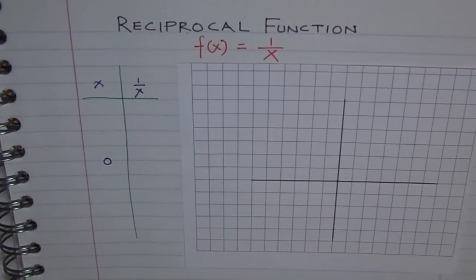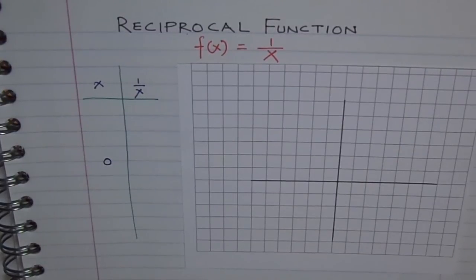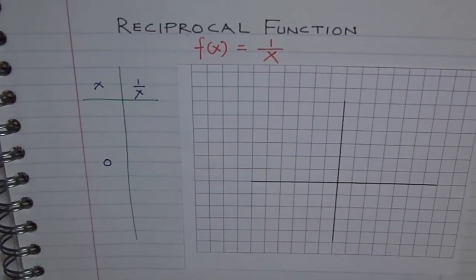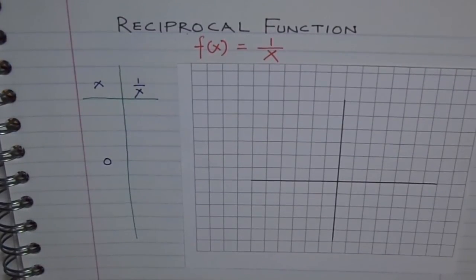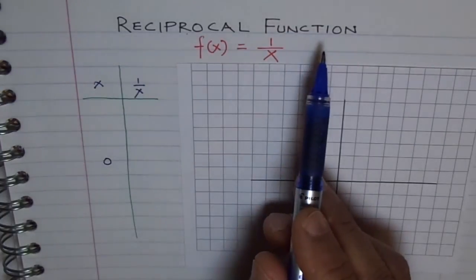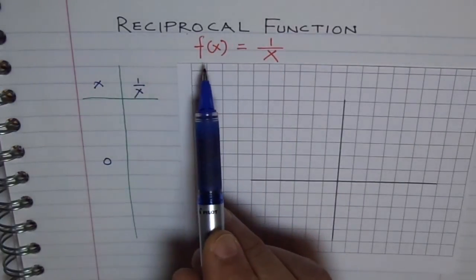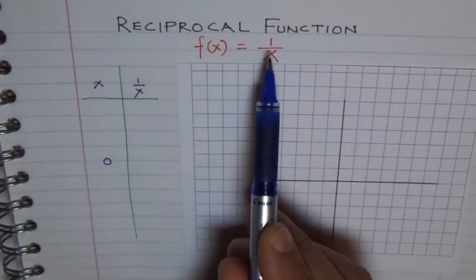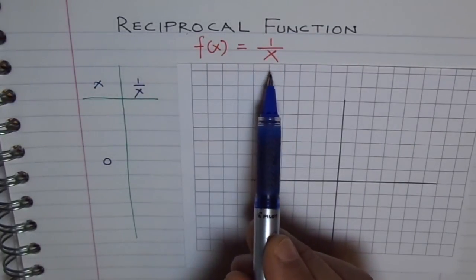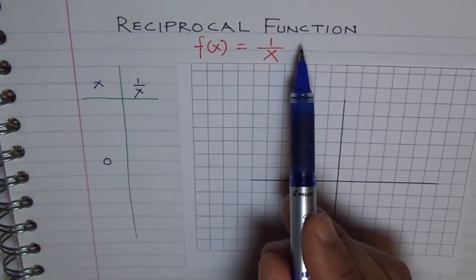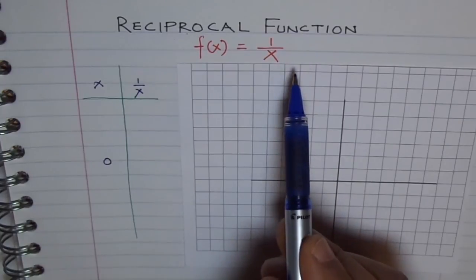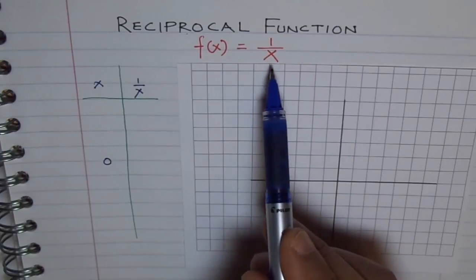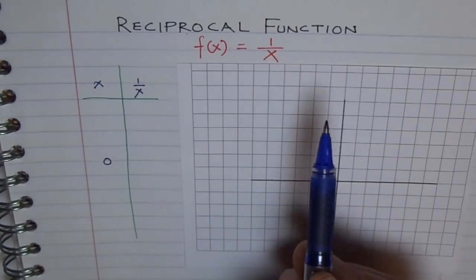Hello. We will now discuss the reciprocal function. It is one of the parent functions, very important to us. The reciprocal function is written as f(x) equals 1 over x. Reciprocal is just the reverse — x becomes 1 over x. So 1 over x is the reciprocal of x.